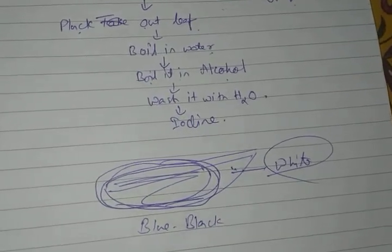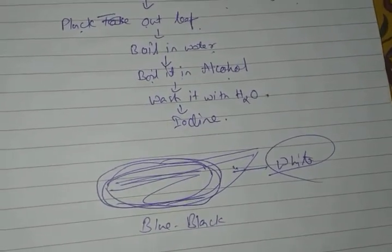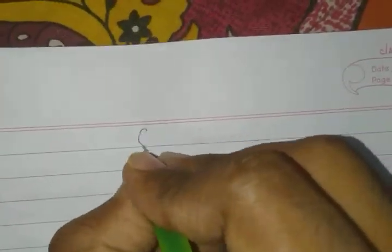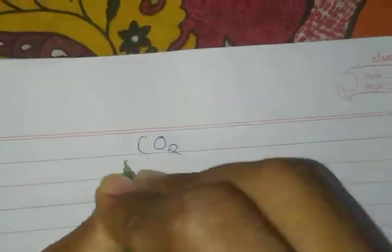So it is proved that without chlorophyll, photosynthesis is impossible. This experiment is done by taking a special kind of plant known as a variegated plant — example is the croton. Now we'll look at how carbon dioxide is important.